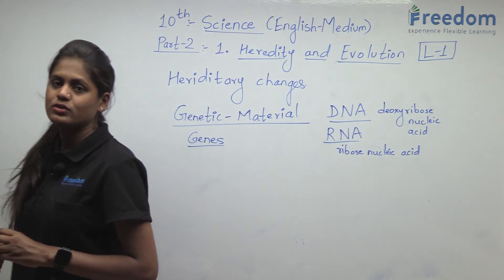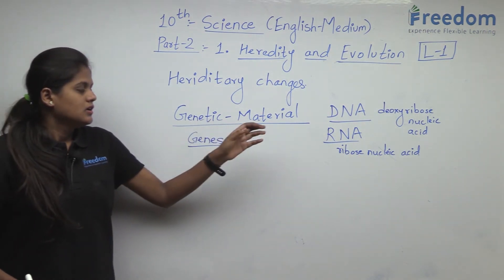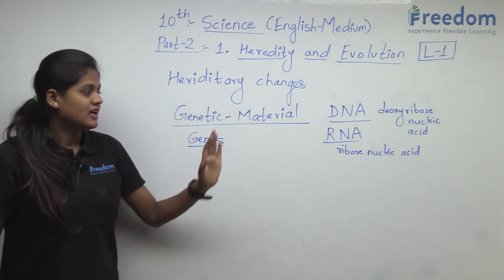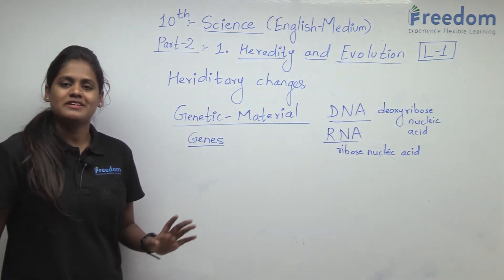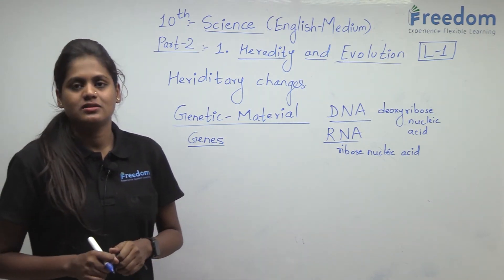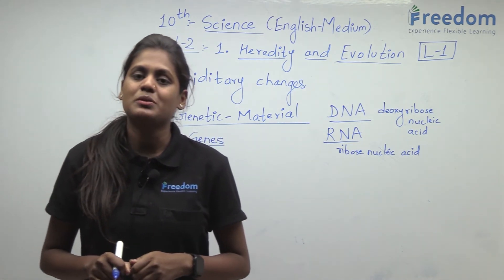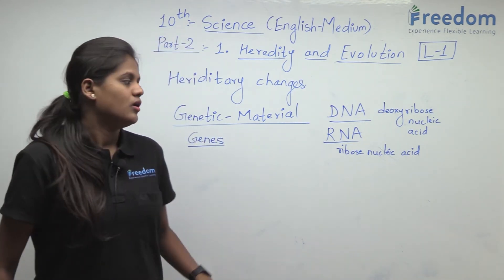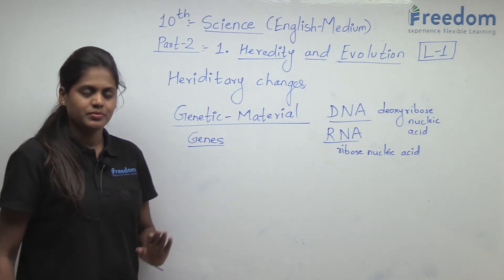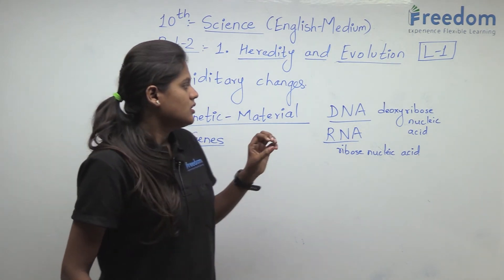My dear students, we are going to see that your DNA and RNA are the genetic material. They are present in the nucleus of the cell. If you have any organism, you have genetic material present in the nucleus. And that's why you get to see the characteristics of your DNA.